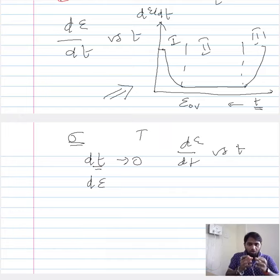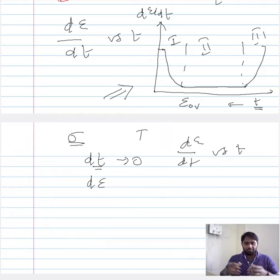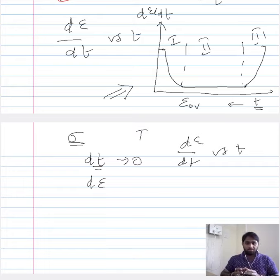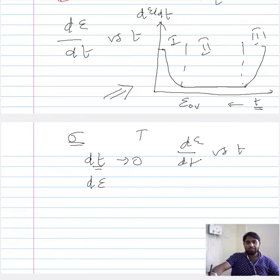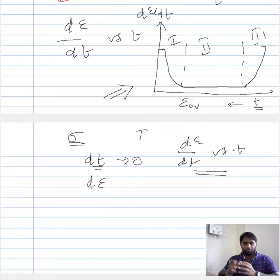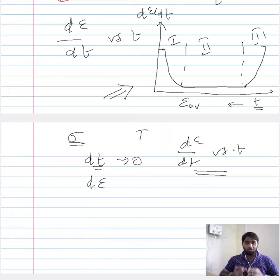It is also possible to plot the strain rate versus time curve directly from experiments by tweaking a few parameters. Ultimately, the strain rate vs. time or strain rate vs. overall strain plot can be calculated from the conventional creep curve or estimated from experiments directly.